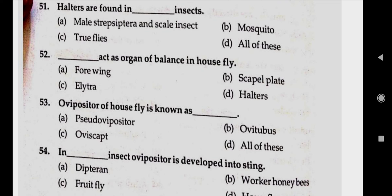Question number fifty-one: halteres are found in dash type of insect. Answer D, all of these — males, Strepsiptera, scale insects, mosquitoes, true flies.